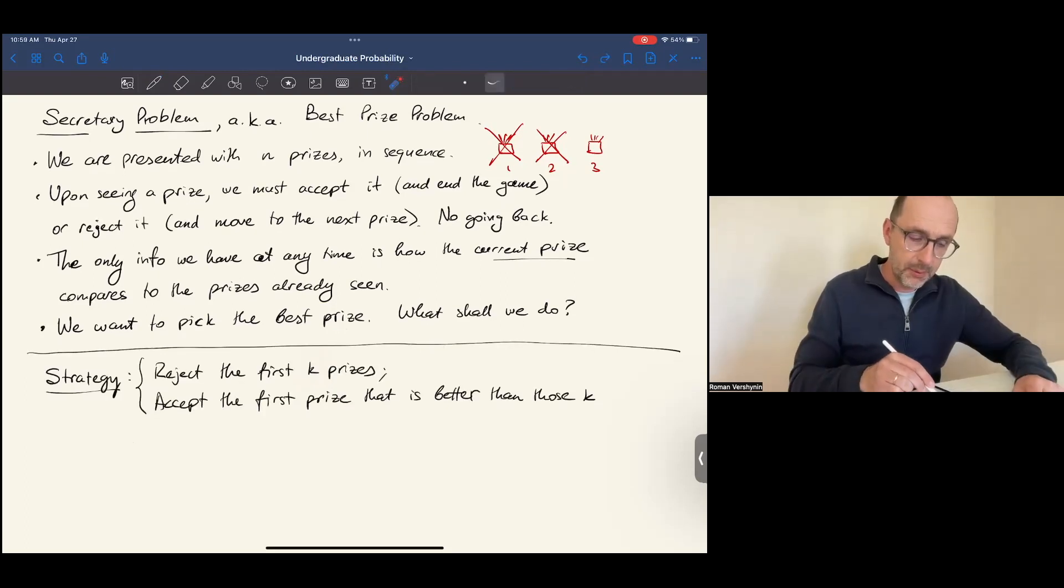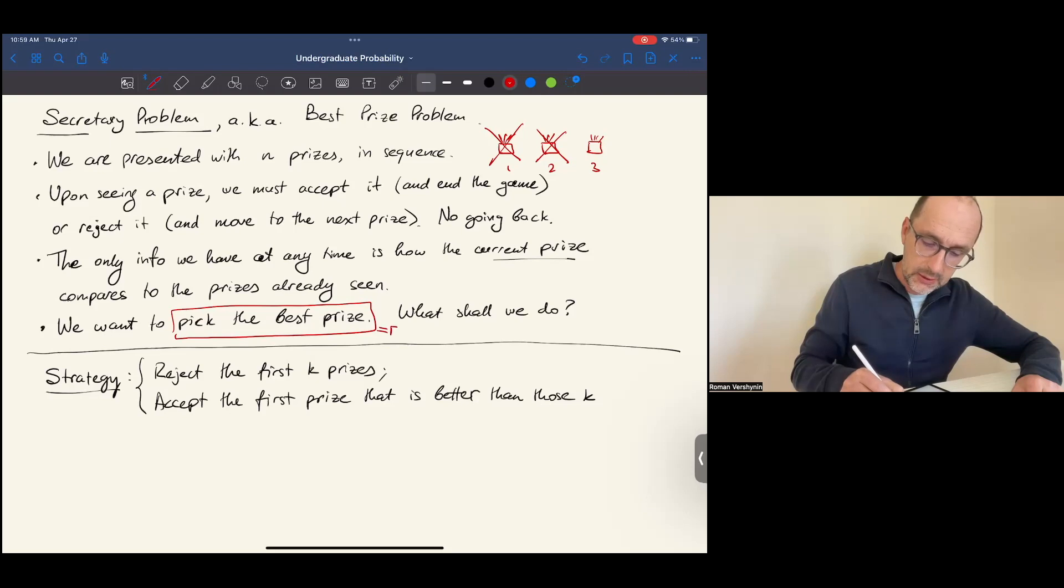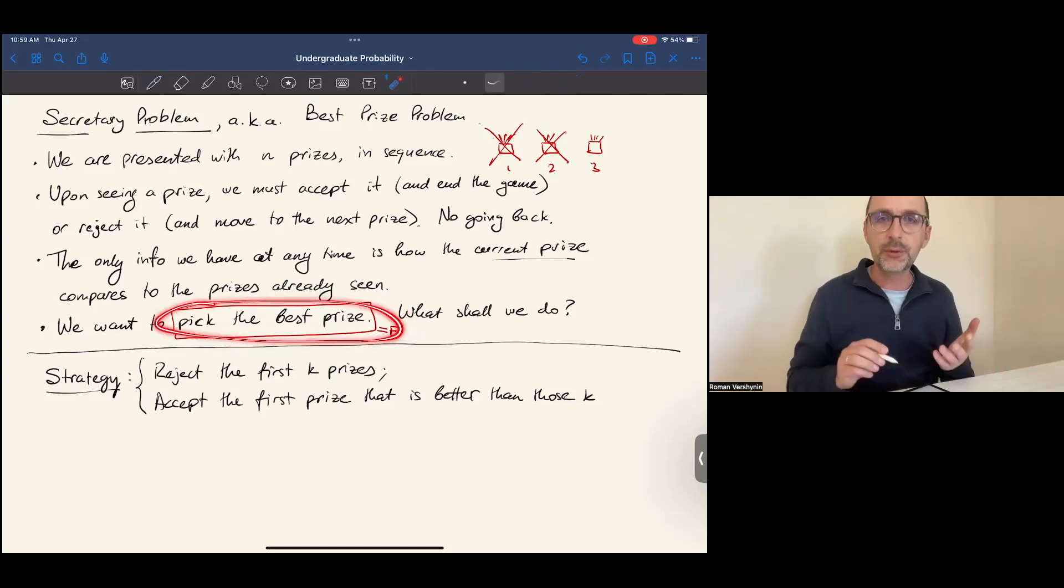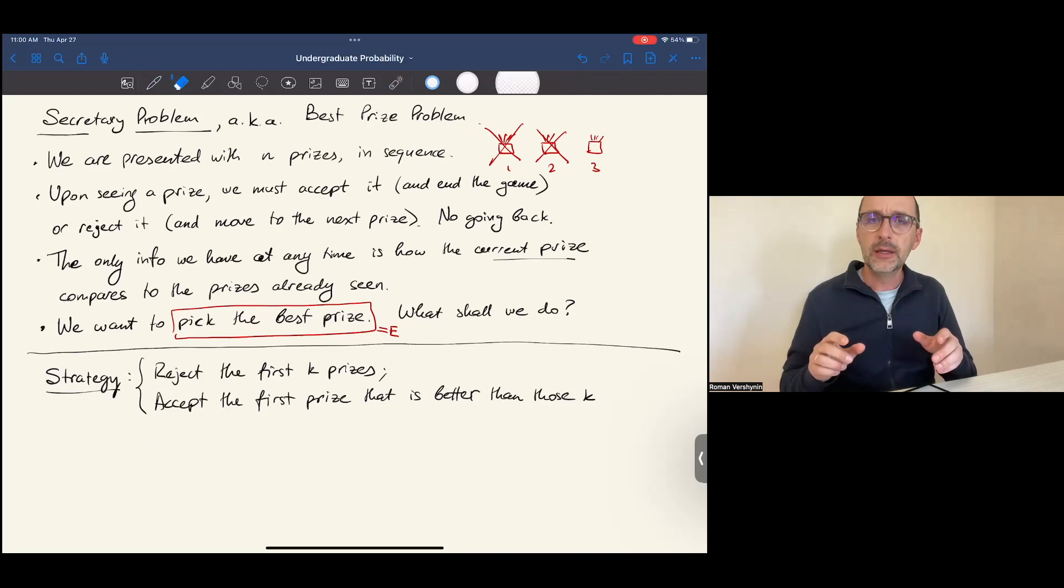So let's compute the probability of picking the best prize, the event that we denote by E, in terms of k, and then optimize, find the value of k that makes that probability of E as large as possible. To compute the probability of E, we will use the conditioning trick. The trick of conditioning is useful if your feeling is like, if only I knew something, it would help me solve the problem. What is that we would love to know in this problem?